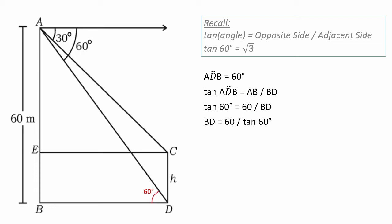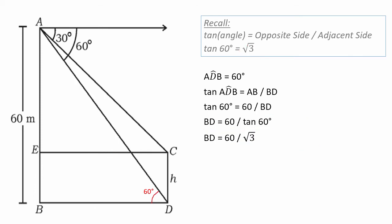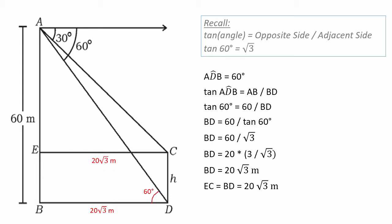Taking BD to the numerator and solving, BD equals 60 divided by tan 60, which gives us BD = 20 root 3. So EC is also 20 root 3.